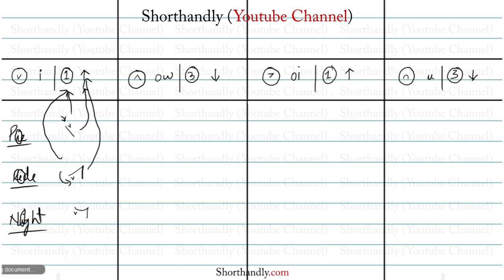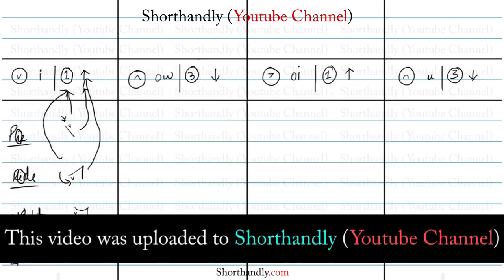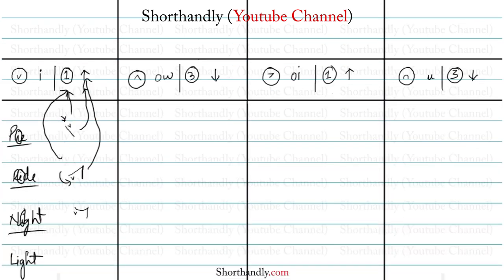We made the outline above the line and put the vowel on the first place. Let's take another example: the word 'light'. This word is written with the outline above the line and the diphthong on the first place. Those were the examples for the diphthong 'i'.